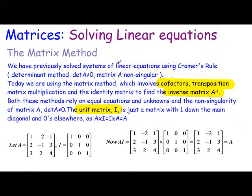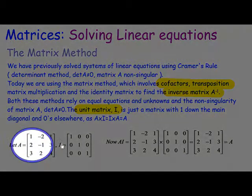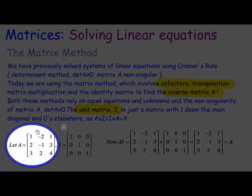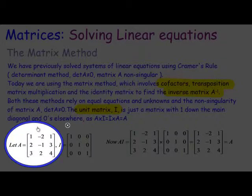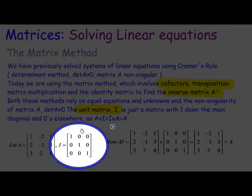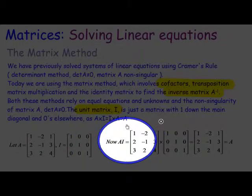Let me do a few examples. I'll change the pen here. We're going to work on this matrix A and keep it consistent throughout this video. You can see matrix A here, and the identity matrix has 1, 1, 1 down the diagonal.